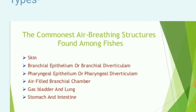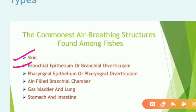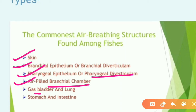The commonest air-breathing structures found in fishes are: first, skin; second, branchial epithelium or branchial diverticulum; third, pharyngeal epithelium and pharyngeal diverticulum; fourth, air-filled branchial chamber; fifth, gas bladder and lung; and finally, minute stomach and intestine.